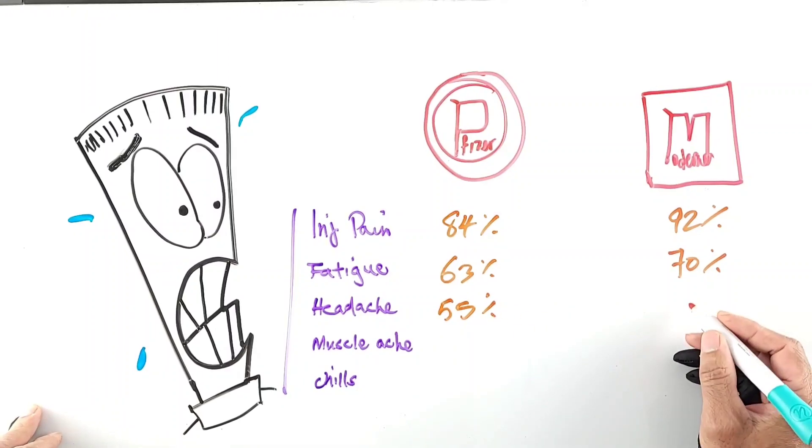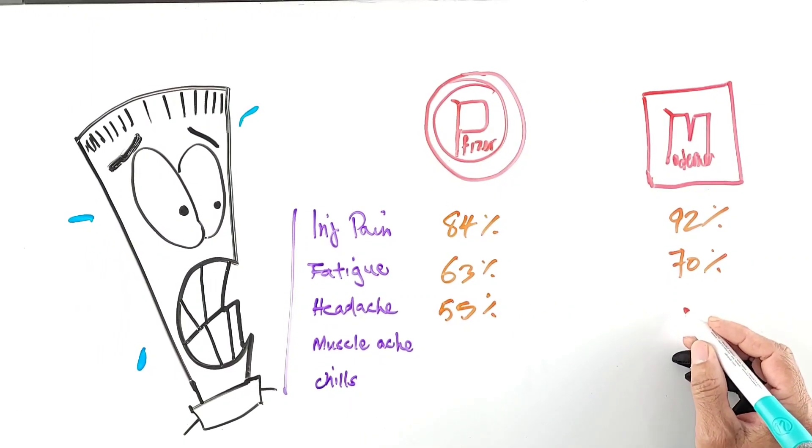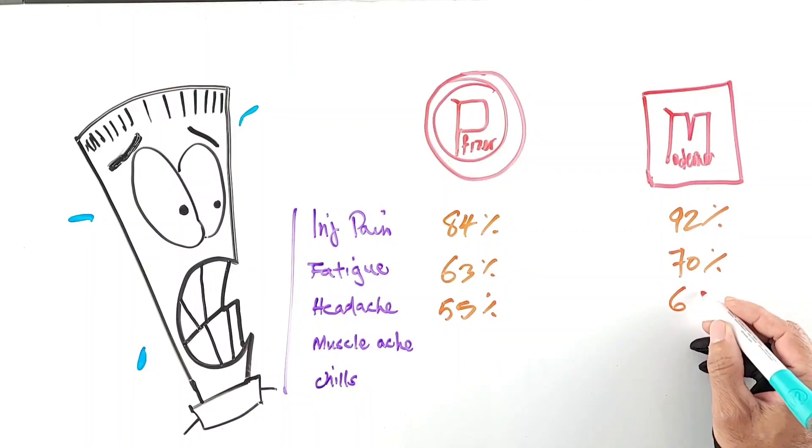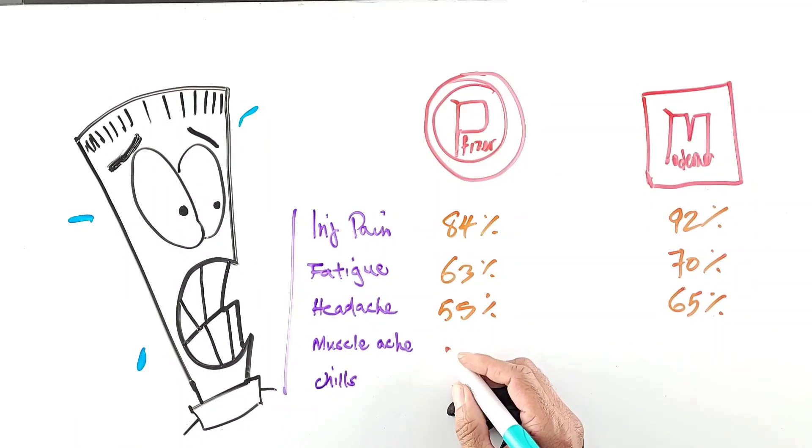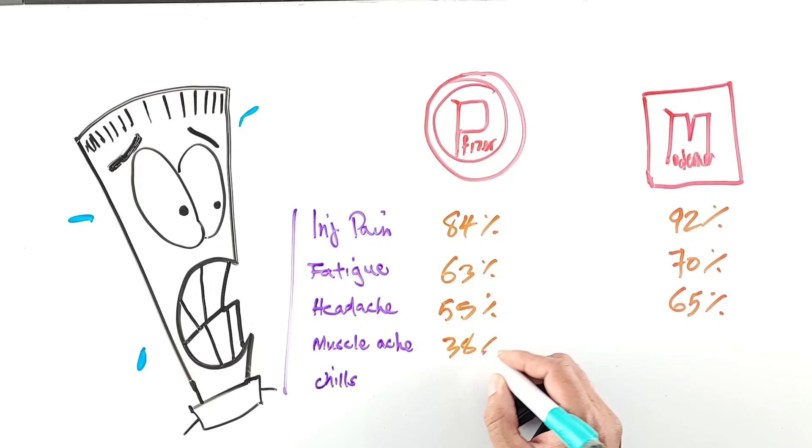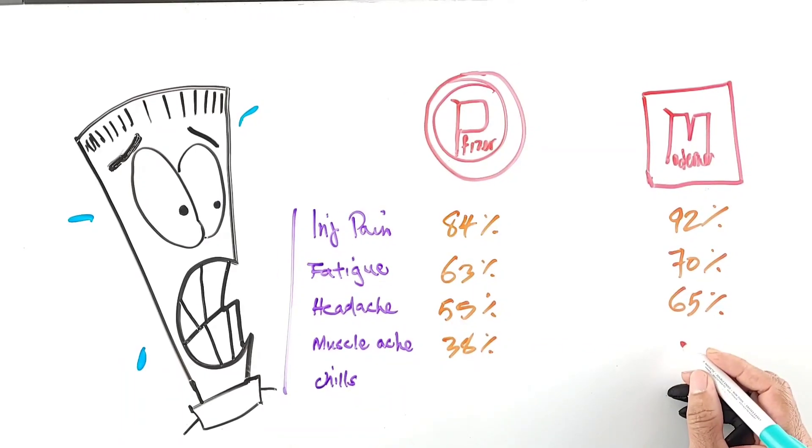and for Moderna the headache was 65 percent. For muscle aches, for Pfizer we're looking at 38 percent and for